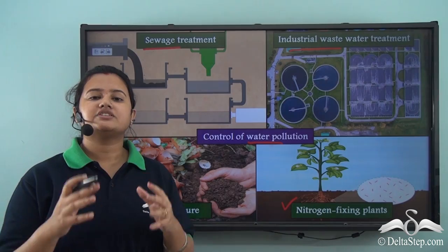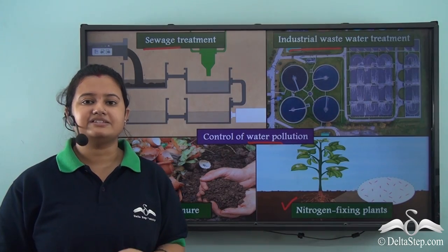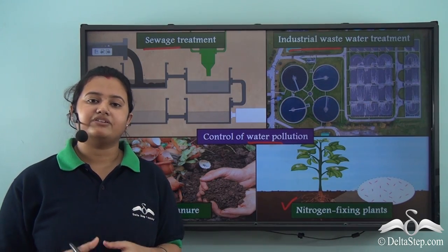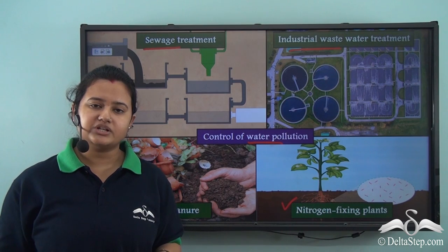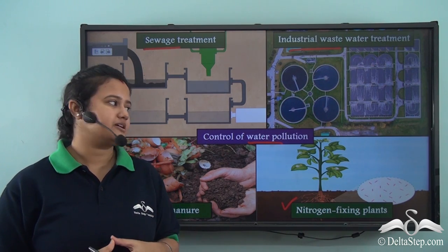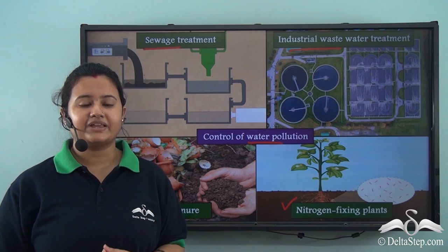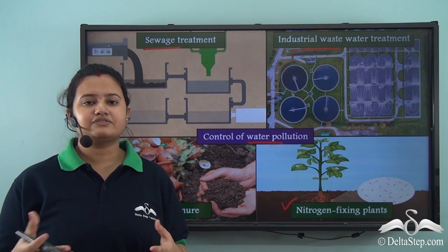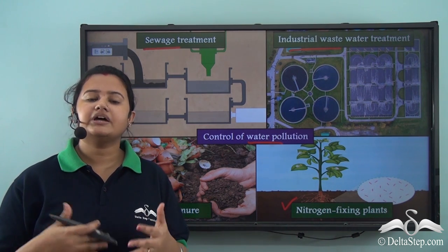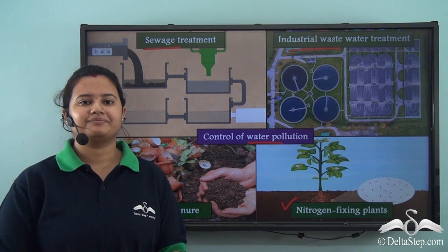This is all about water pollution. In our previous lesson, we read about the sources and effects of water pollution, and in today's lesson, we discussed in detail the control of water pollution. In our next video, we will discuss another type of pollution — soil pollution.